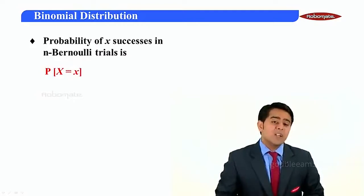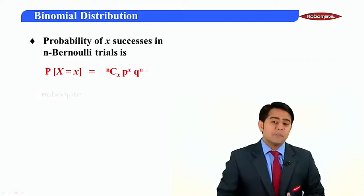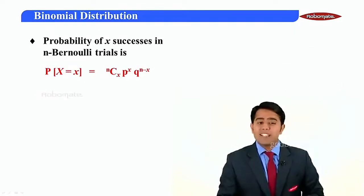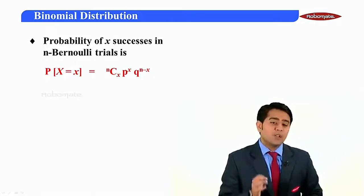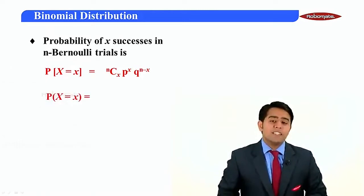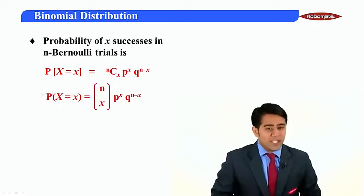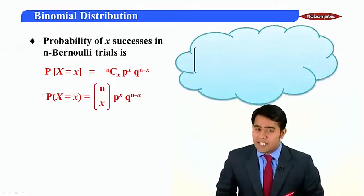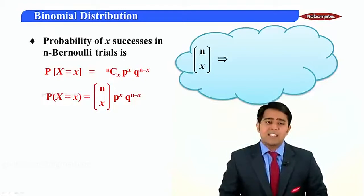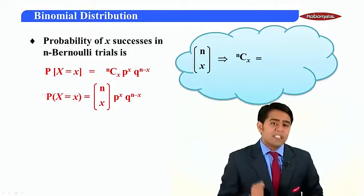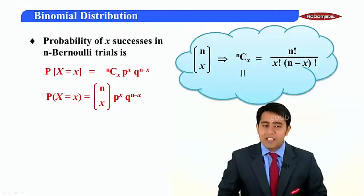The probability of x successes in n Bernoulli trials is denoted as P(X = x), given by the formula: nCx times p raised to x times q raised to n minus x. This can also be written using the bracket notation where n over x represents nCx, which equals n factorial divided by x factorial times n minus x factorial.